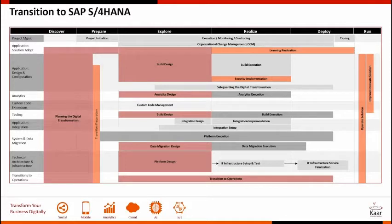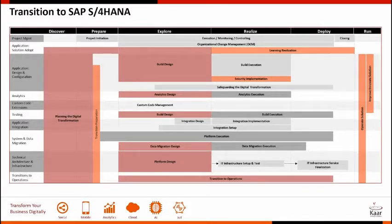From our experience on S/4 conversions, we suggest saving all open development and overwriting development with a copy of production. Some customers think twice about doing this, but it accomplishes two things: first, post-S/4 your development and quality systems are as close to production as possible; and second, each mock run helps you zero in on the downtime and identify all problems you could possibly foresee in production. Since most conversion errors are data-driven rather than technical, running conversions on copies of production means you'll have fixed most errors before touching production. The only remaining delta is transaction data entered since your last mock run.